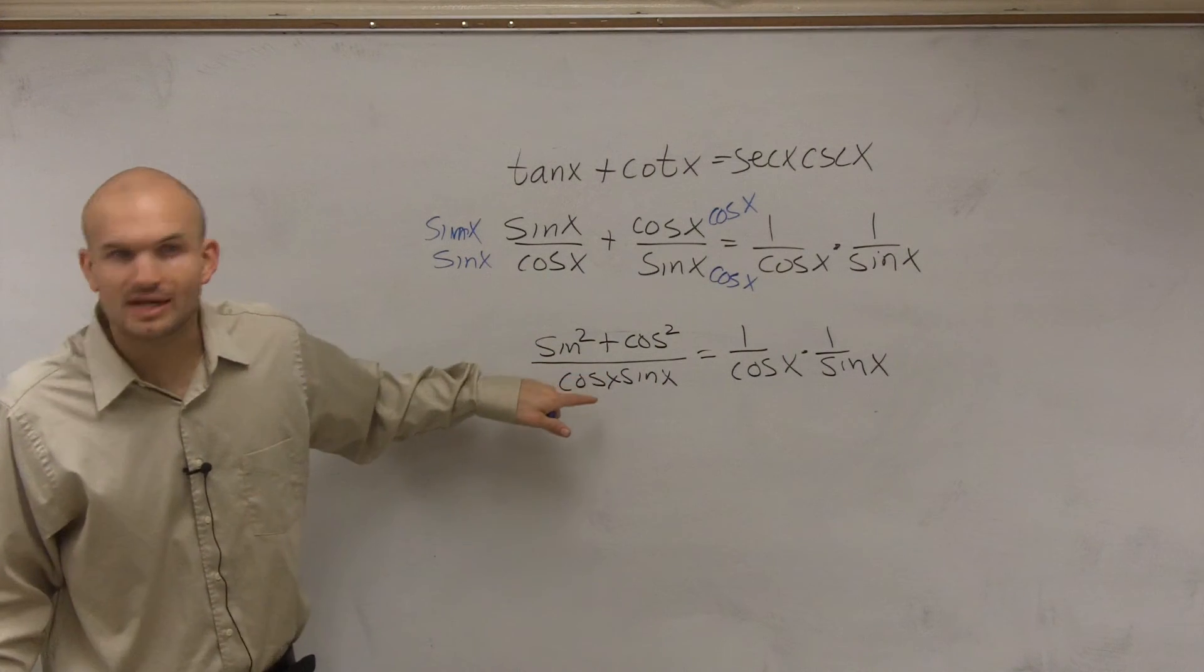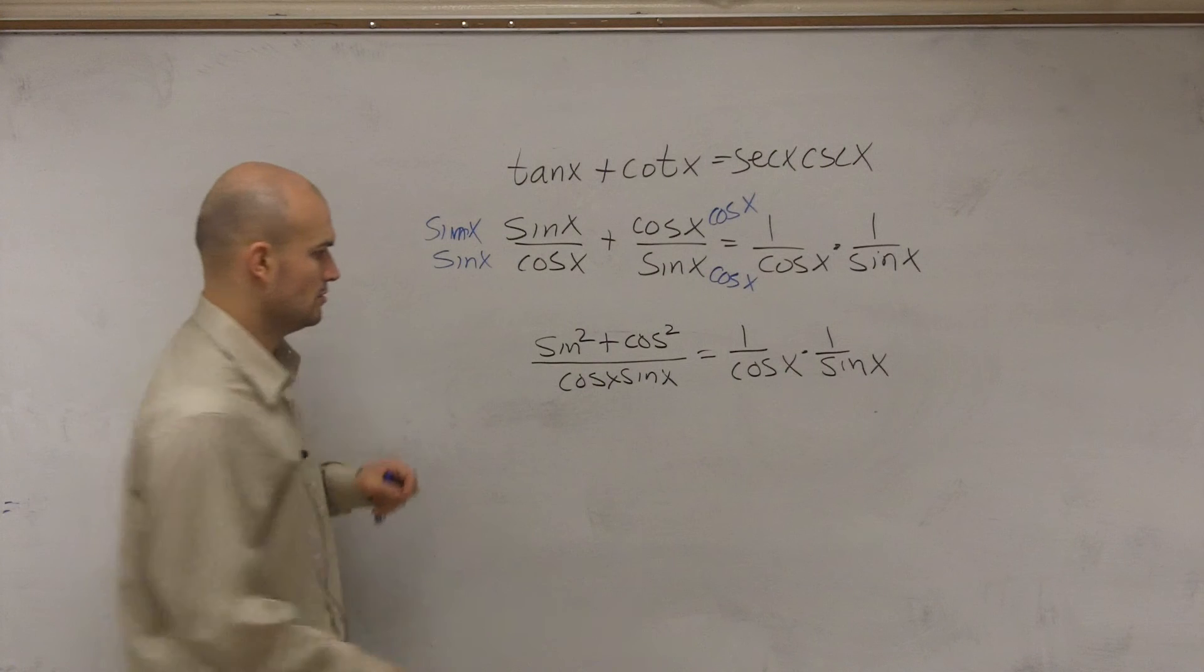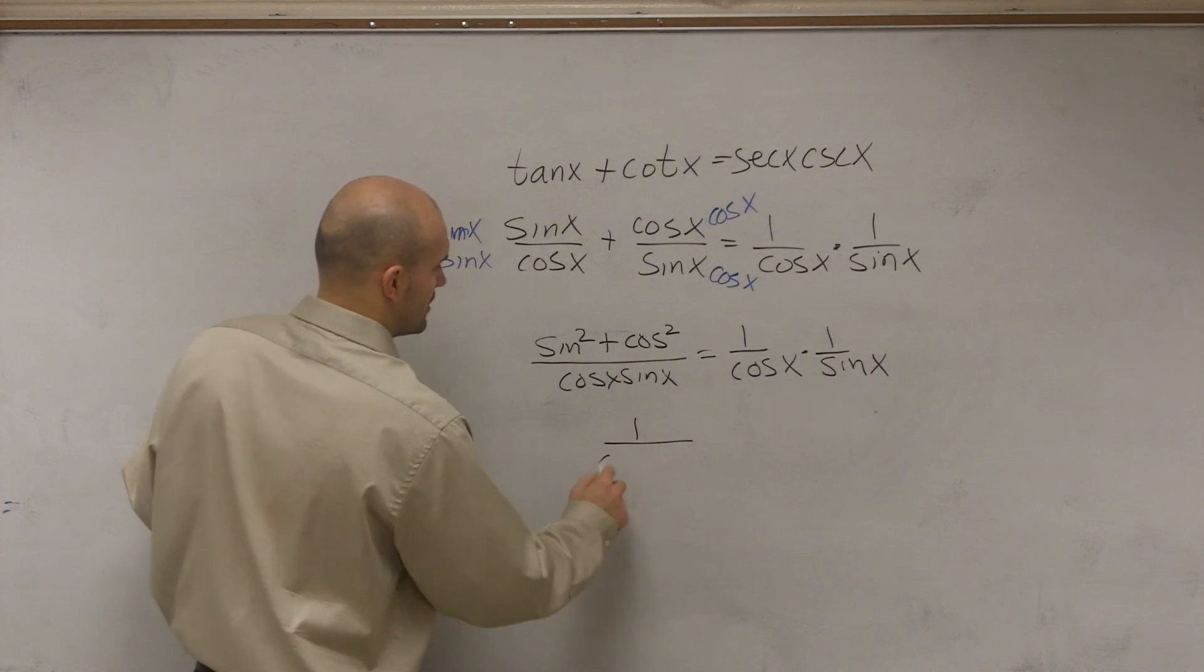Well, by using the Pythagorean identity, sine squared plus cosine squared equals 1. And therefore,